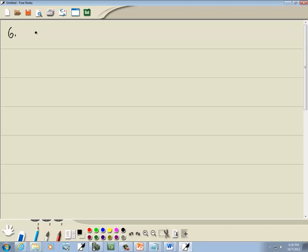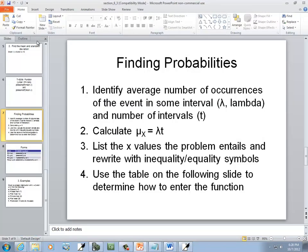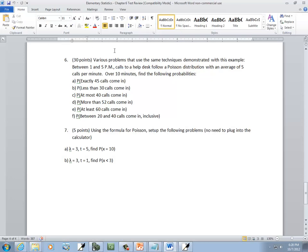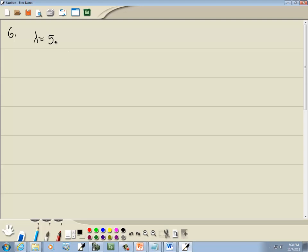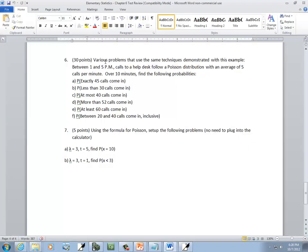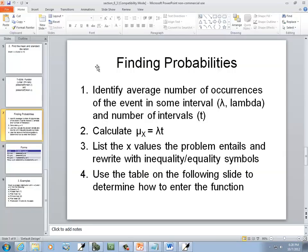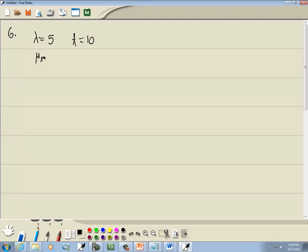Okay, so we need to identify lambda. That's step one here. Identify the average number of occurrences of the event in some interval. Well, it says the average of five calls per minute, so lambda would be five. Now t would be the number of intervals. It says over ten minutes. Well, this is an average of five per minute, so over ten minutes, t would be ten. Now we need to calculate our mean. So mu sub x is equal to lambda times t. So that would be five times ten, or 50.